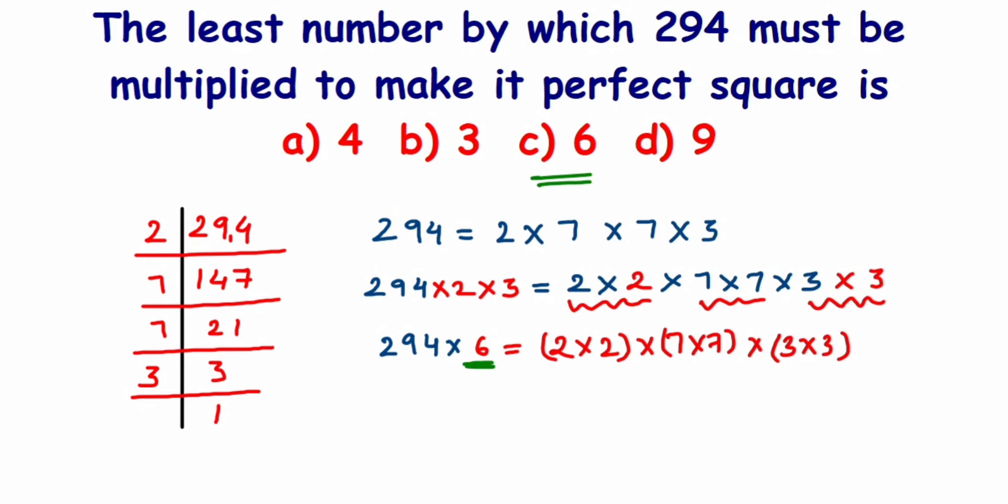We can solve this further - you can multiply 294 with 6 and the answer you got will be the perfect square and you can find the square root. If in case we have to find out the square root, then I'm going to show you. For now, the answer is 6. Let's multiply 294 and 6 and see what is the answer.